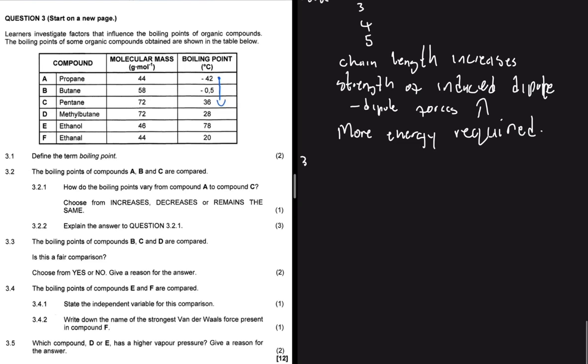Question 3.3 says the boiling points of compounds B, C, and D are compared. Is this a fair comparison? So let's go look at B. Here's B, which is butane. C, which is pentane. And D, which is methyl butane. And then, is this a fair comparison?